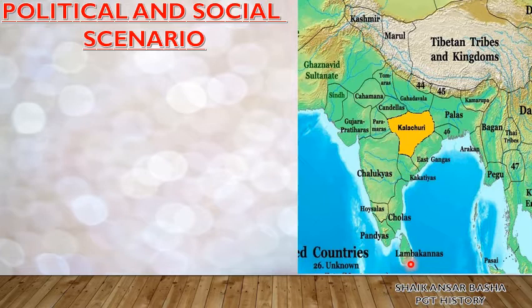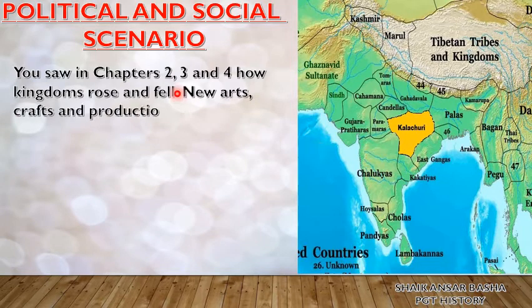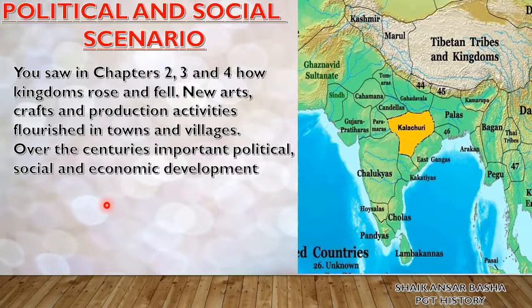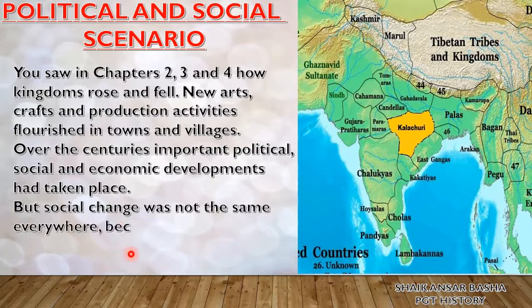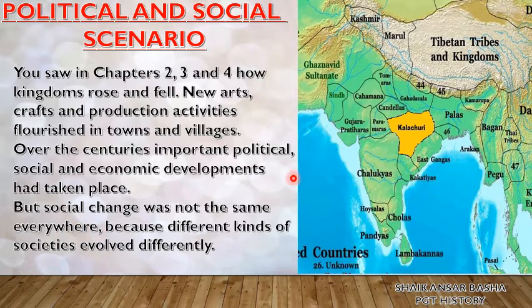And Lambakarnas in Sri Lanka. These are all the political scenarios of India during the medieval times. As you saw in chapters two, three and four, kingdoms rose and fell. Arts, crafts and production activities flourished in towns and villages over the centuries. Important political, social and economic developments took place, but social changes were not the same everywhere because different kinds of societies evolved differently — differing in language, customs, traditions and food habits.